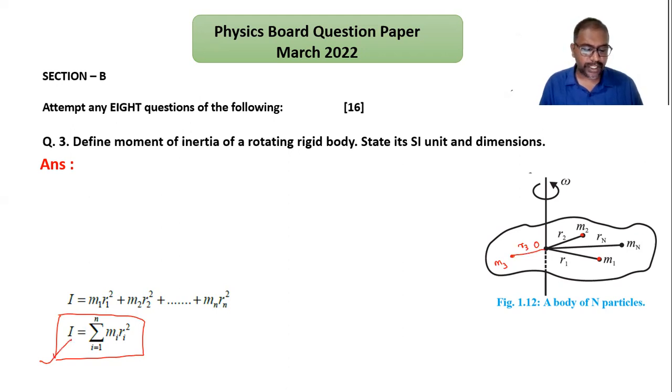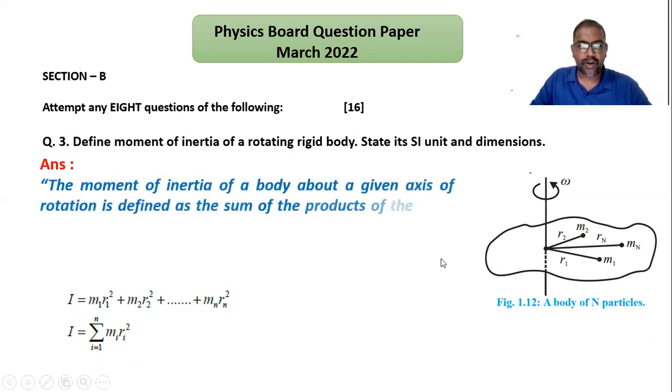This sign is the algebraic sum of the product of two things: the masses of particles of the body and the square of their distance from the axis of rotation. So this is the definition. You can see the definition is on screen.